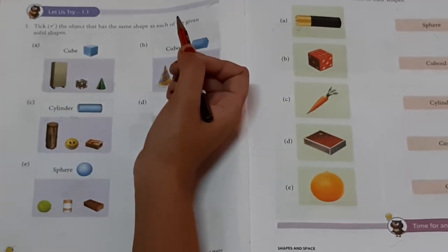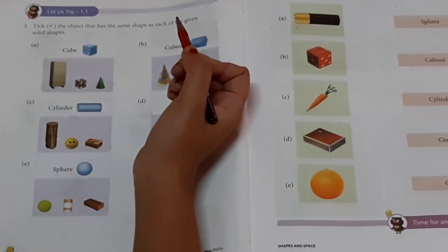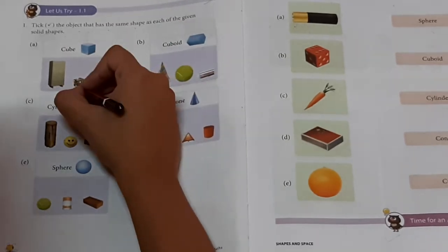First one, cube. Identify the cube, children. Yes. Then, tick.